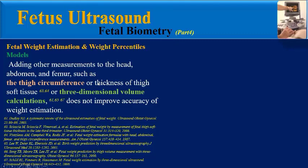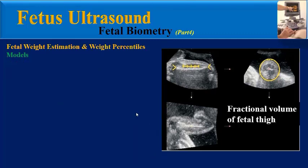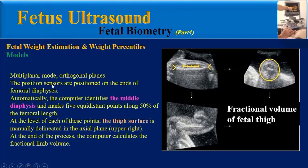According to many studies, adding other measurements to the head, abdomen, and femur — such as thigh circumference, thickness of thigh soft tissue, or three-dimensional volume calculations — does not improve accuracy of weight estimation. This 3D ultrasound image was taken by multiplanar mode and orthogonal planes technique.